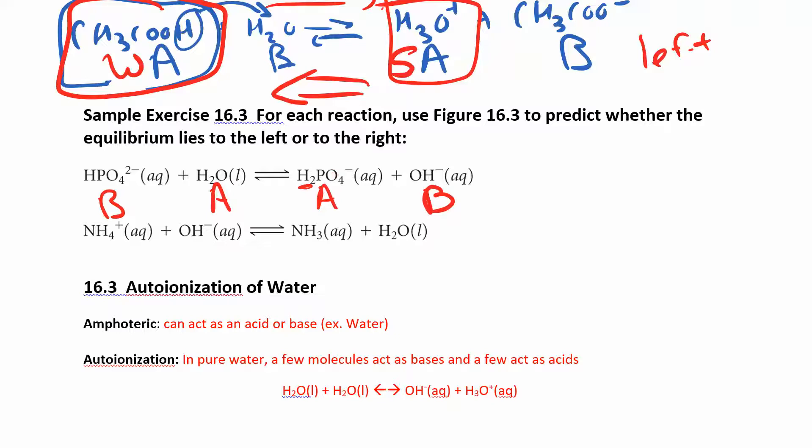And so now what you're going to do is compare the acids in the table. You could also compare the bases. It also works for bases. It's going to go from the stronger acid and base to the weaker acid and base.